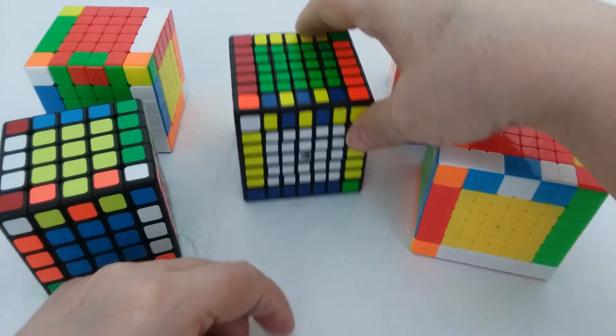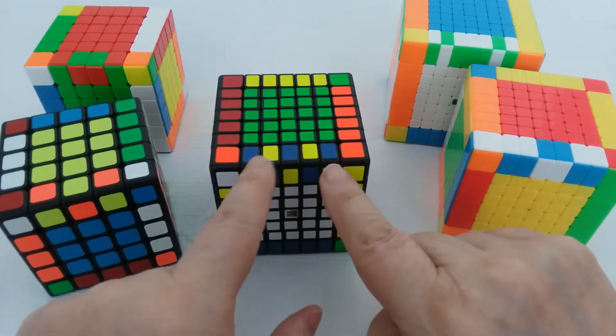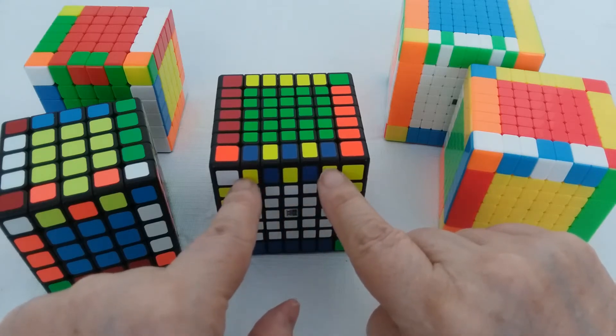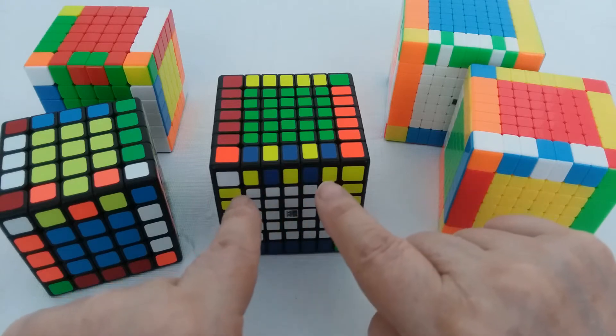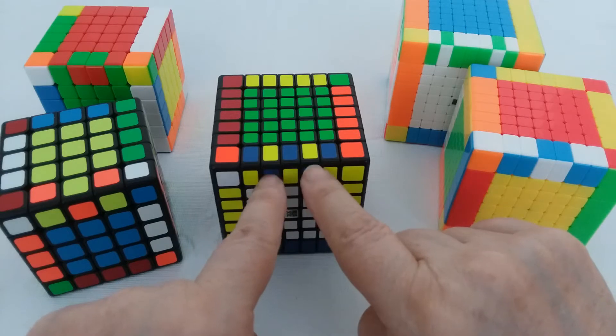So on a 7x7, here's a case you could get - and this is not the only case because you could have just the outside ones flipped or you could have these four flipped. I wanted to show you this because this is a case that seems to confuse a lot of people, where just these two are flipped.